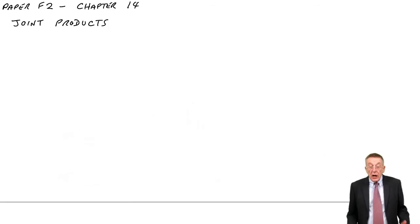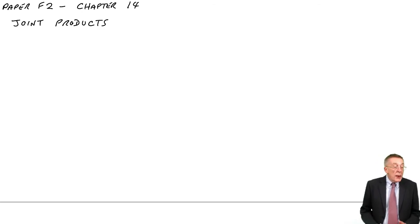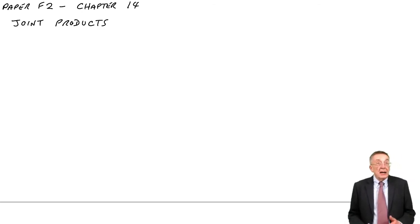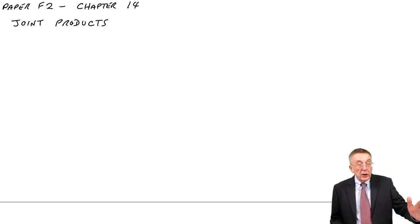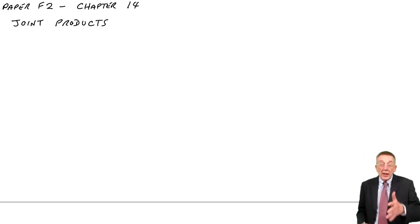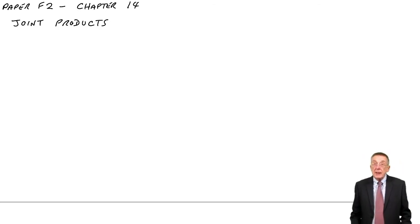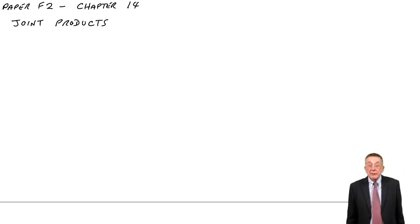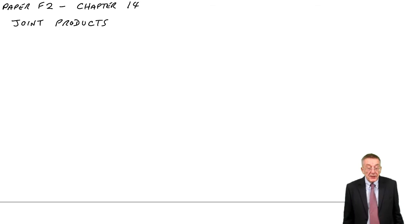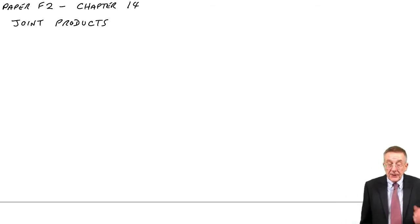This is the last lecture on process costing. We've done normal and abnormal losses. We've done work in progress. This one, which is chapter 14 of the free lecture notes, is on joint products.